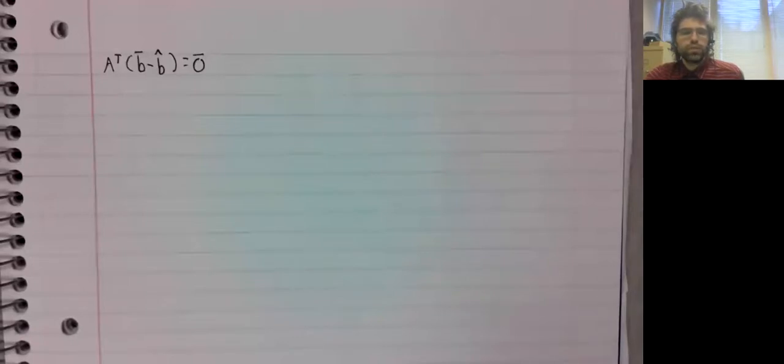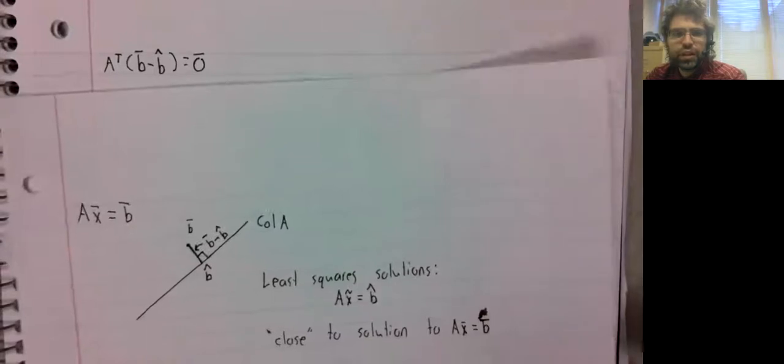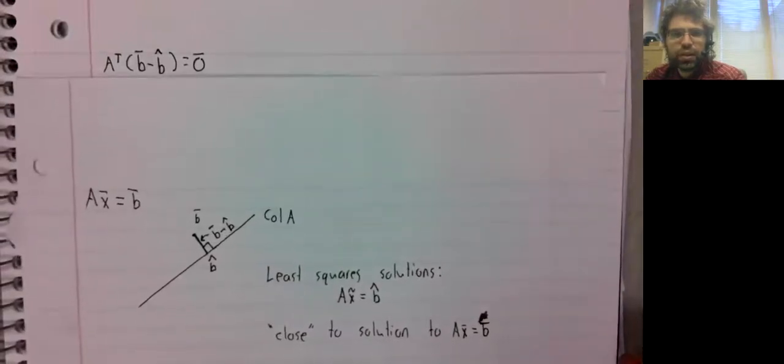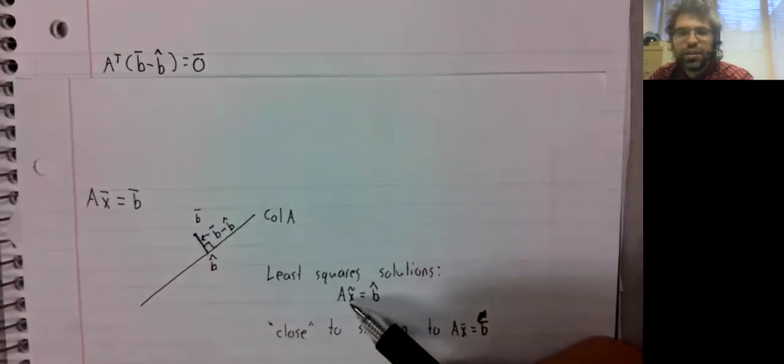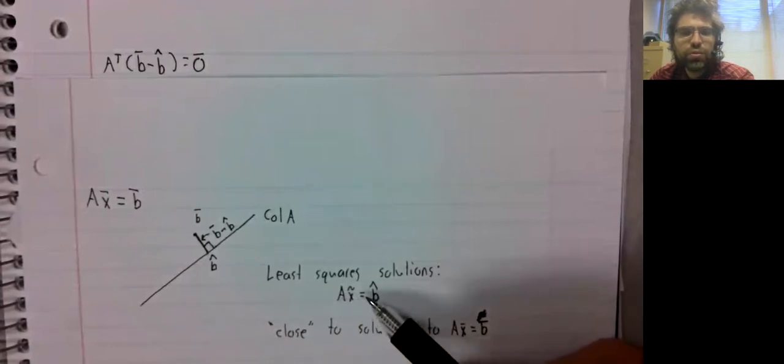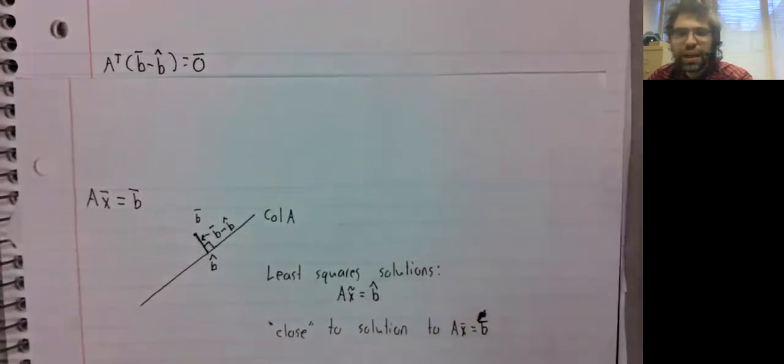So here's what we've got so far. And now let's remind ourselves, we're looking at least squares solutions, and x tilde is a least squared solution if A x tilde equals b hat.